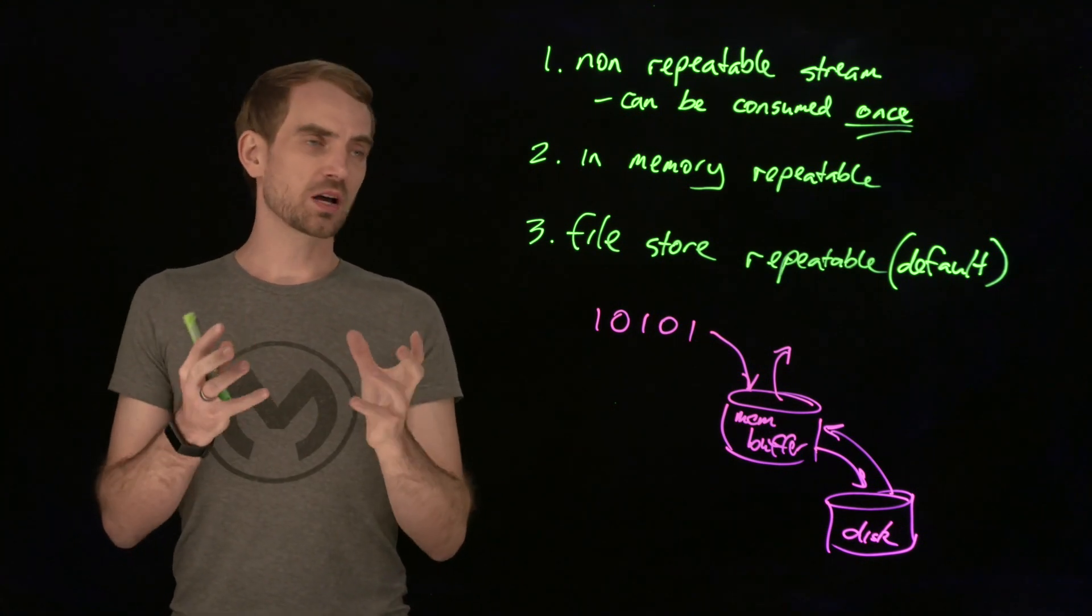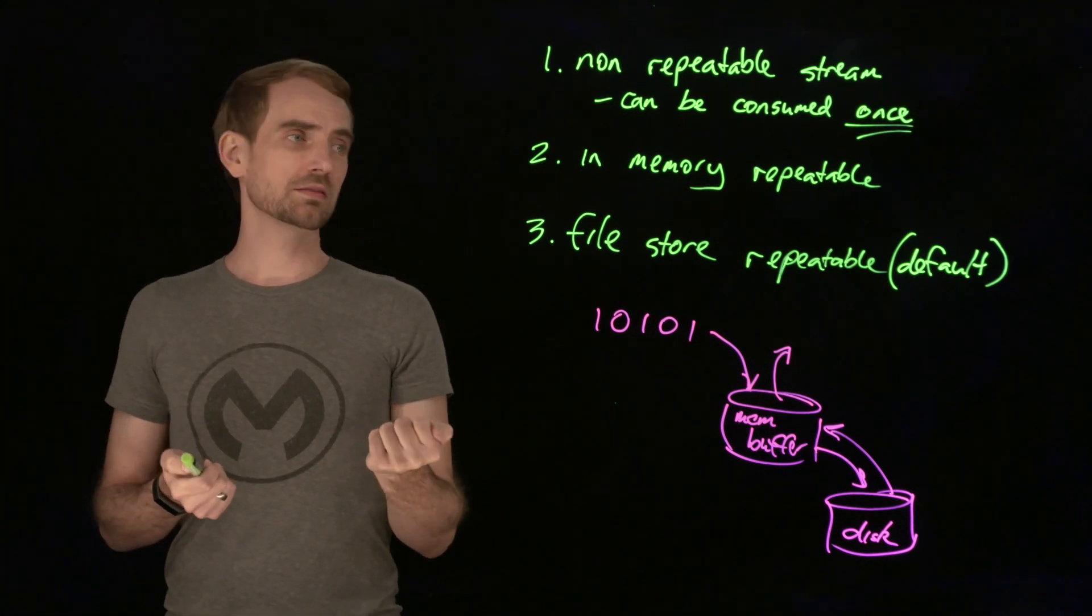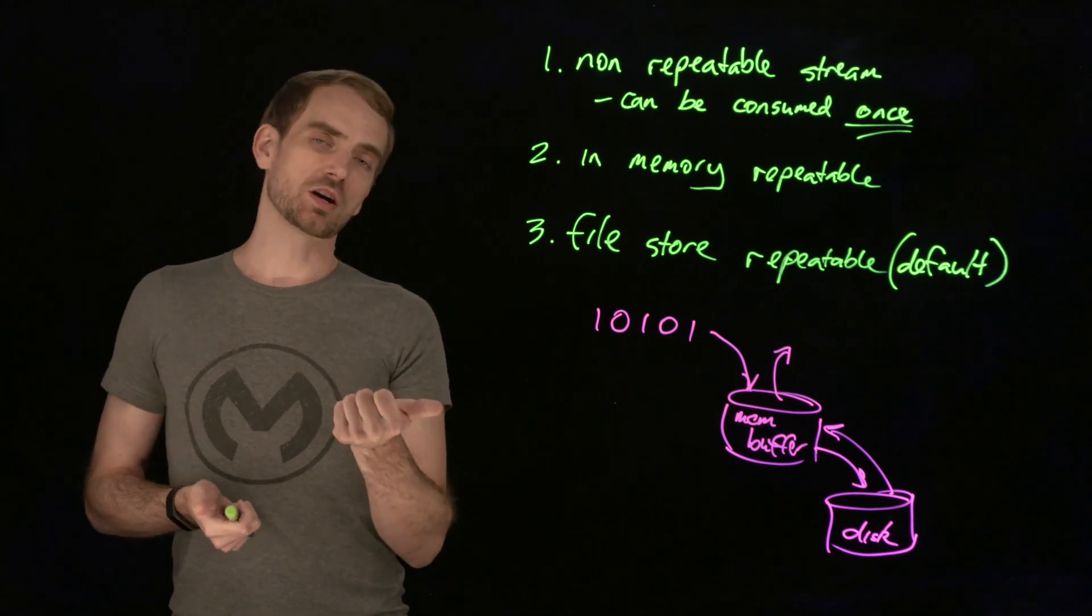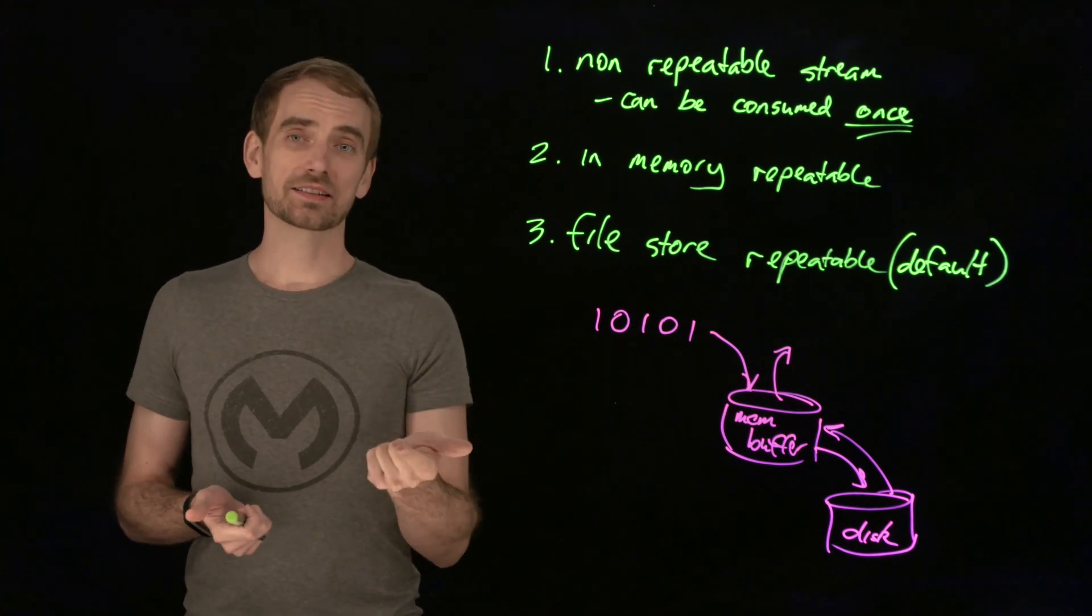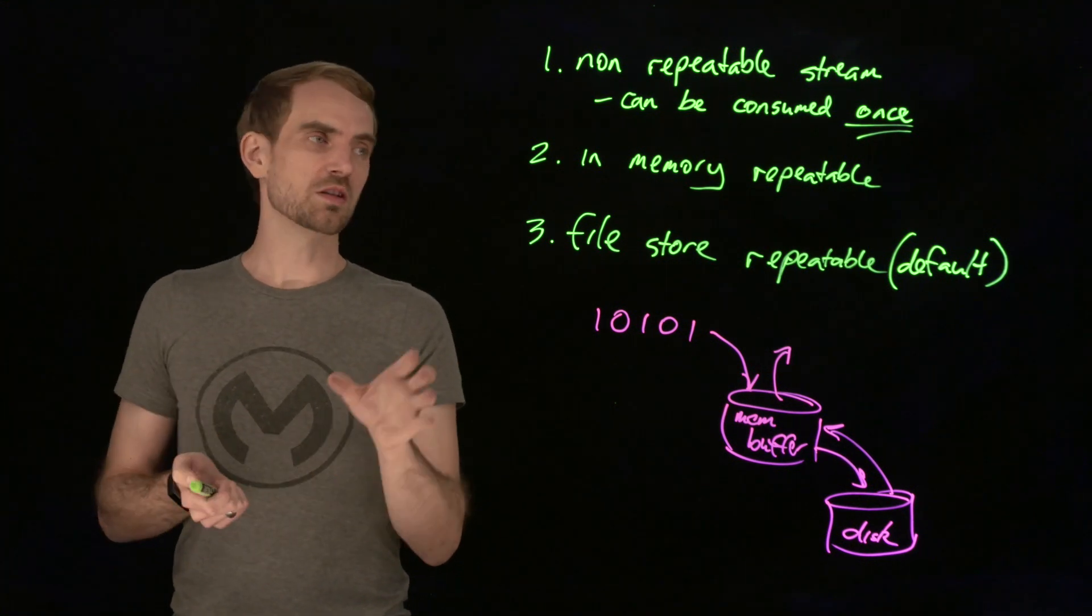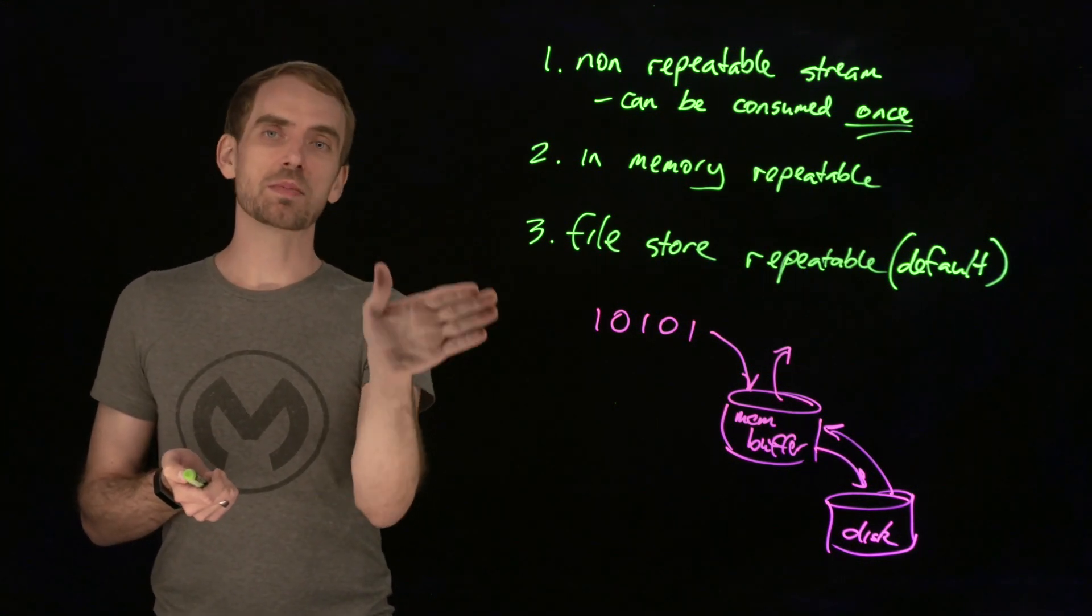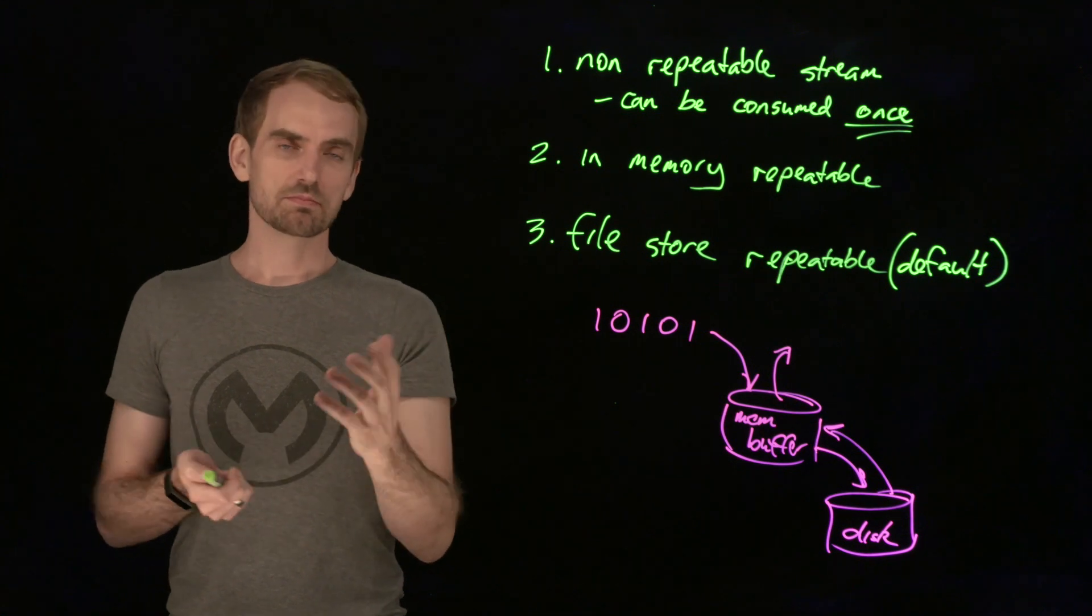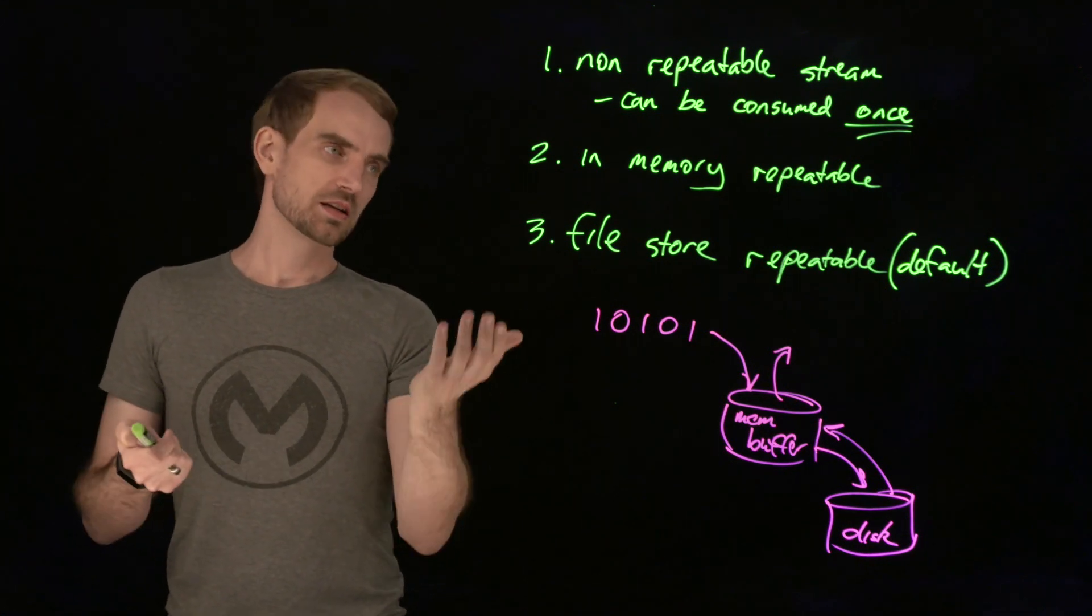Now there's two overall types of streams that you may need to deal with. One is binary, so that would be something like the file connector. If you're reading a file, it's just bytes. So the thresholds that you would set for the amount of in-memory would be bytes, kilobytes, megabytes in memory.